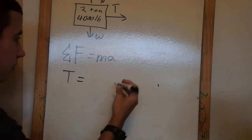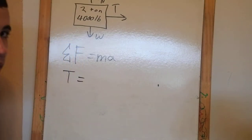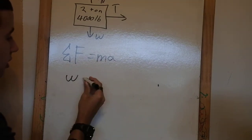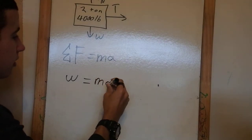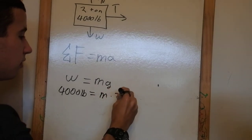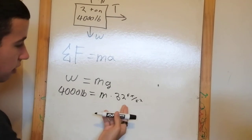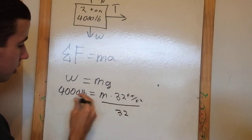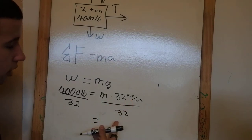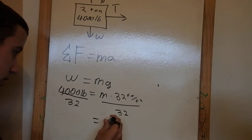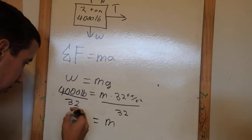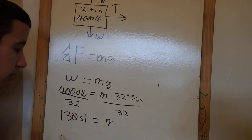Now we have 4,000 pounds as the weight, so before we go into this equation, we've got to figure out the mass. To find mass, we use the weight equation: weight equals mass times gravity. So 4,000 pounds equals mass times 32 feet per second squared — because this is English units. We divide both sides by 32 feet per second squared; the pound equals slugs times feet per second squared, so the feet per second squared cancels out and we end up with slugs. We have two sig figs, so our number is going to be 130 slugs.